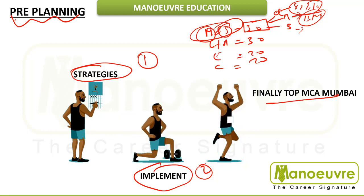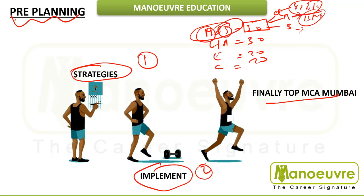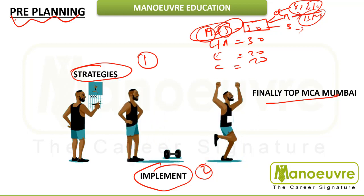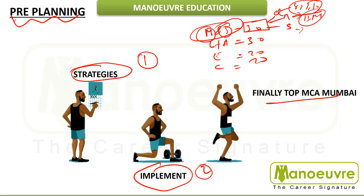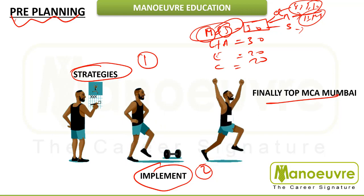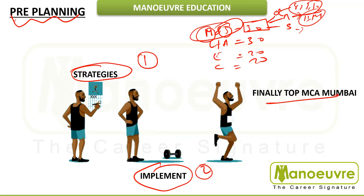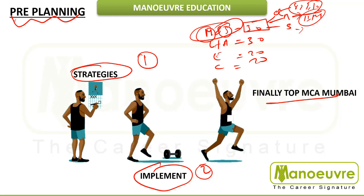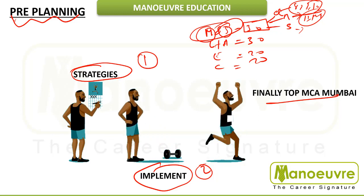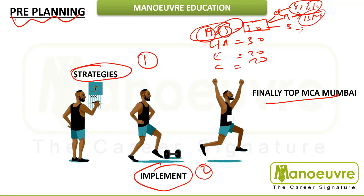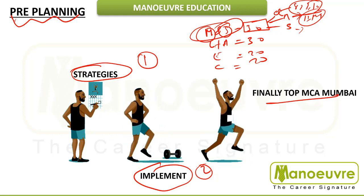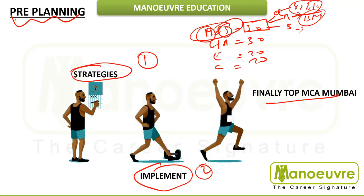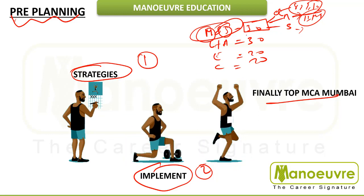Quant will be 10th standard level — percentage, profit and loss, ratio proportions, time speed and work, simple and compound interest. This is your quantitative aptitude. Then your 11th-12th maths topics like matrices and determinants. So you need to understand that mathematics, quant, and probability, permutations and combinations — which is part of statistics — will all come. So all 30 questions will cover these areas.